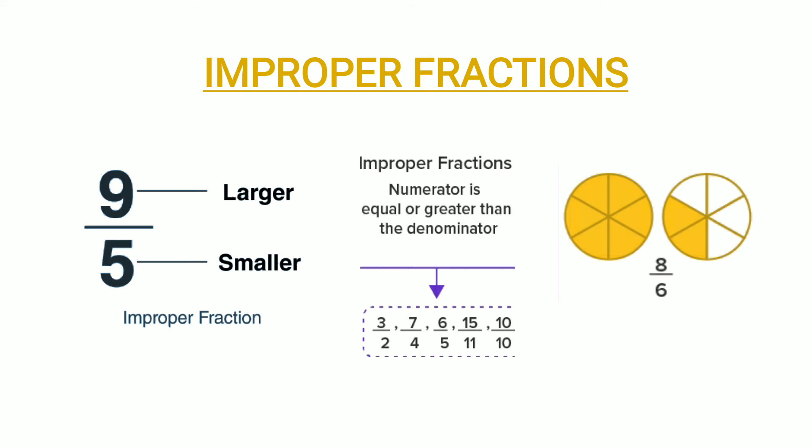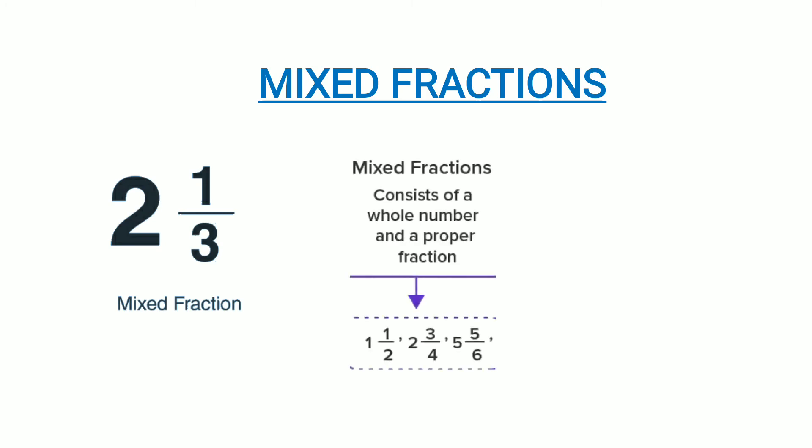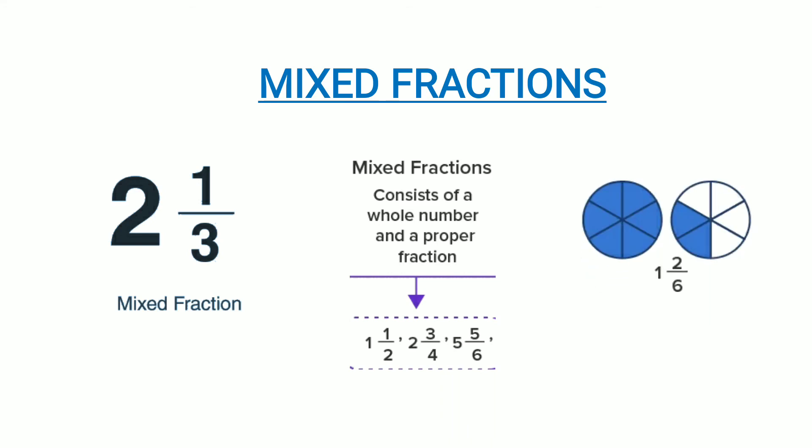Mixed fractions — for example, two and one by three. Mixed fractions are the combination of a whole number and a proper fraction. Here, two is a whole number and one by three is a proper fraction, so such fractions are called mixed fractions. More examples: one and one by two, two and three by four, five and five by six, and so on.